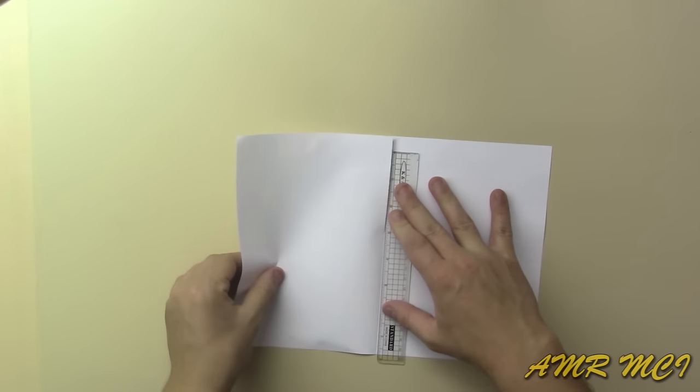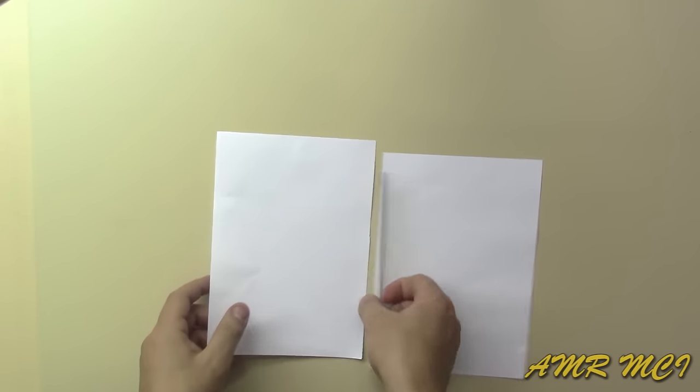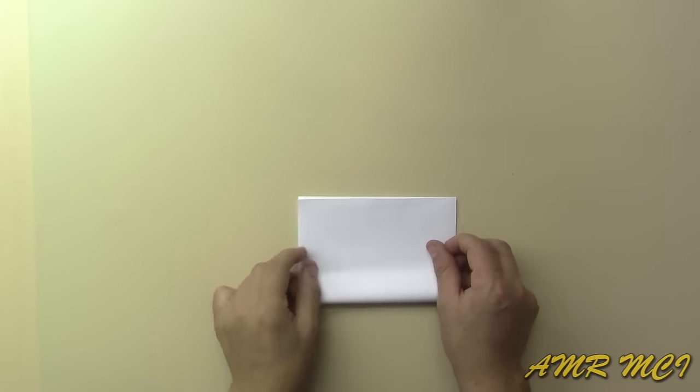Now we need to make a cover for the grip, so we'll cut a sheet of paper in half then fold each piece this way.